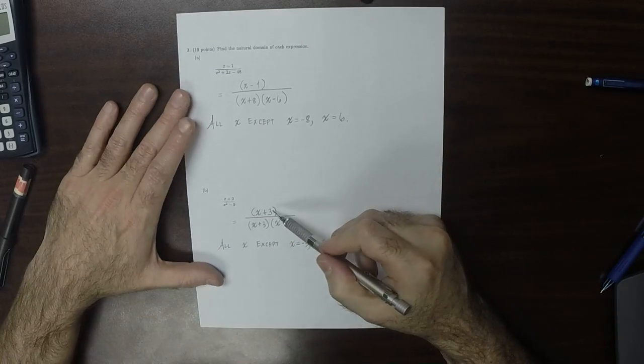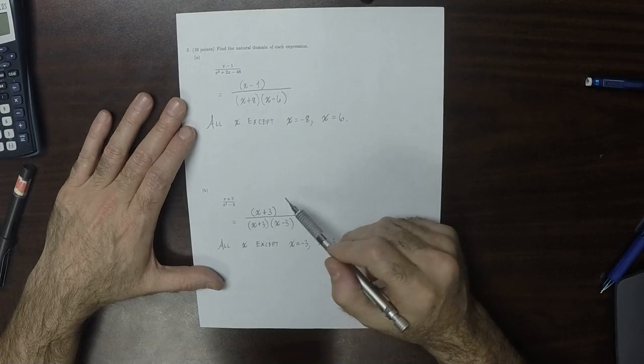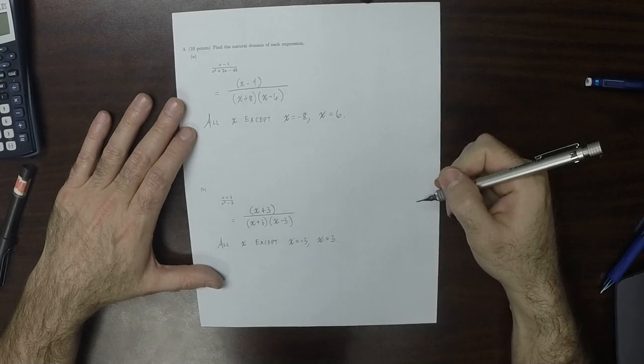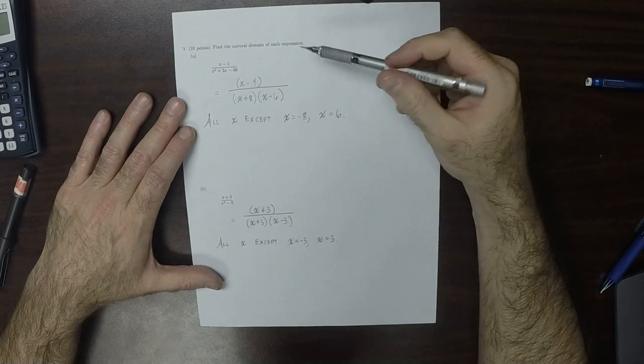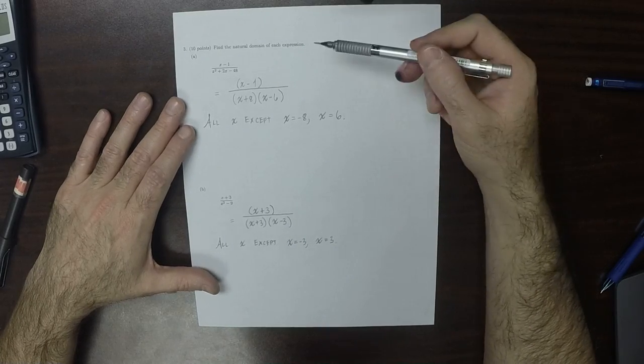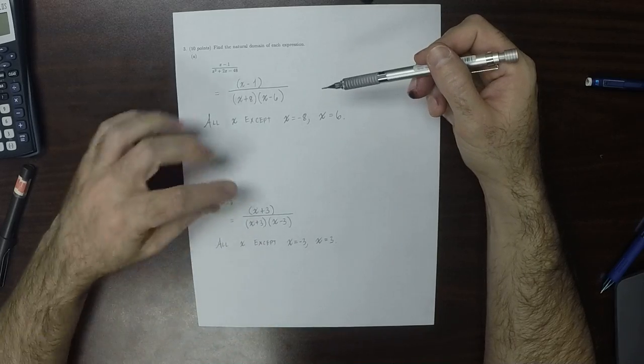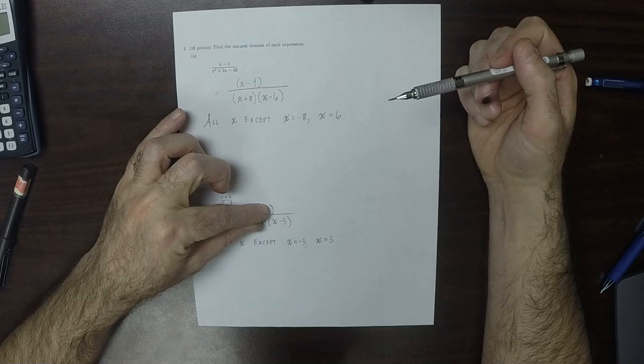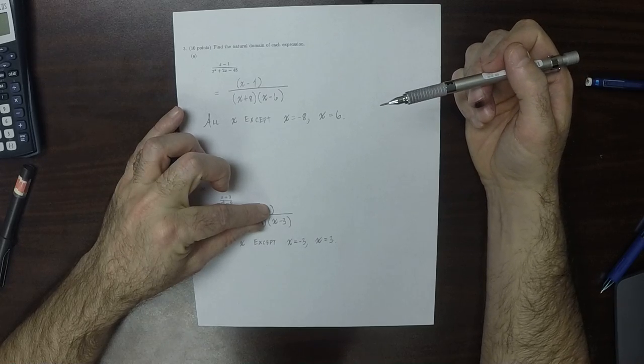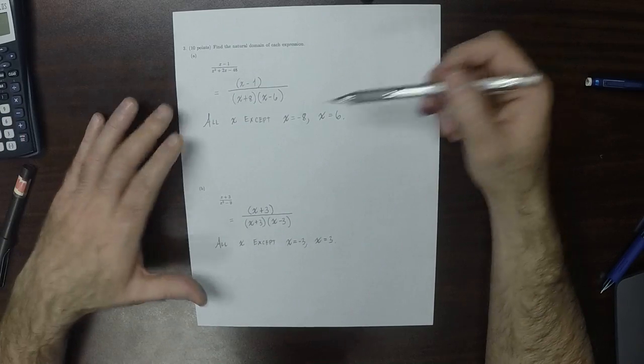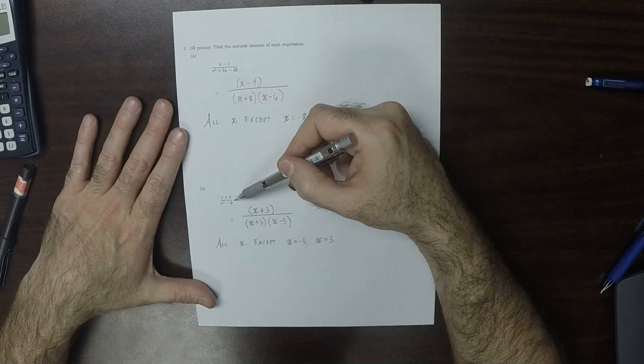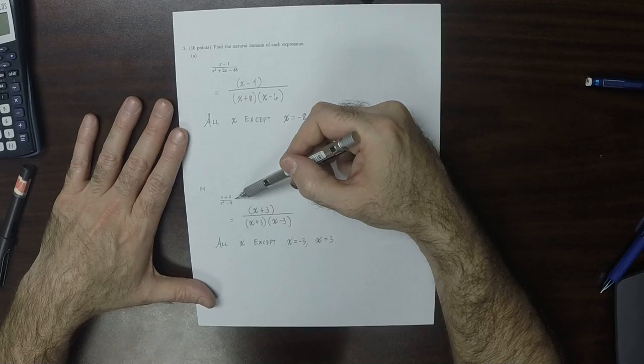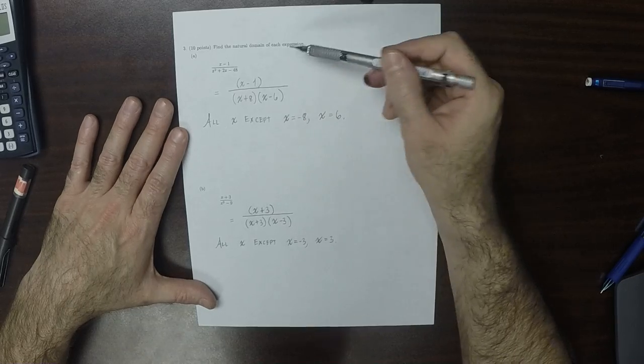However, some students will be tempted to cancel the x plus 3 over x plus 3. And that cancellation is not legal when you're considering natural domain because if you were to cancel the x plus 3s, then suddenly the resulting expression could be evaluated at negative 3. But that one cannot. And the question is about this expression here. This expression that was given cannot be evaluated at negative 3. So that cancellation is not legitimate on this exercise.